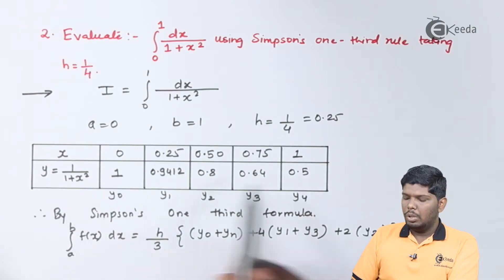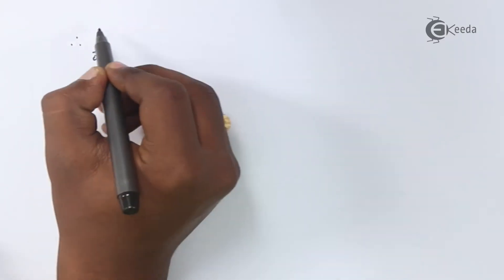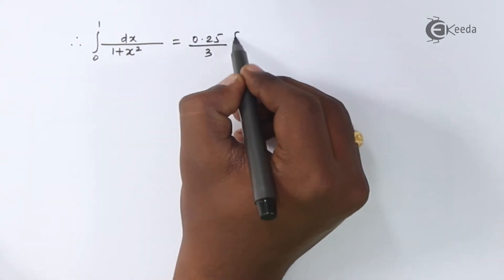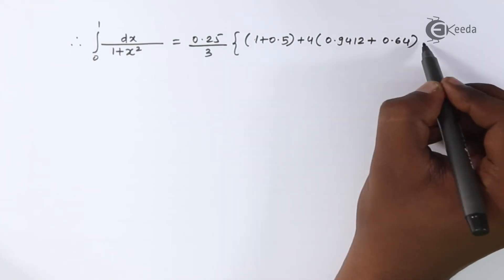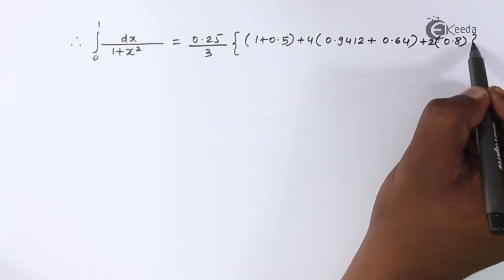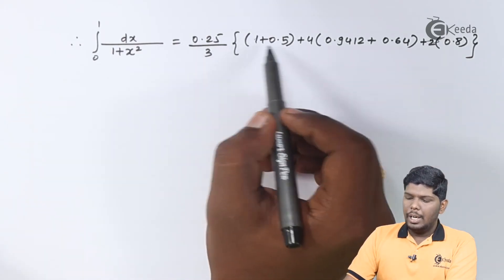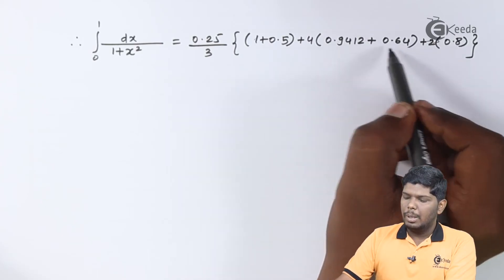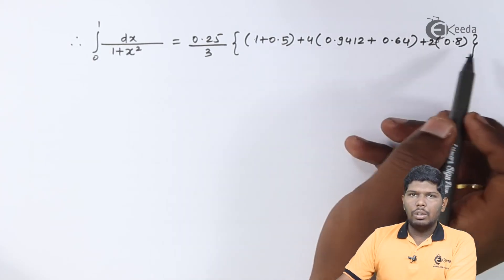Now let us substitute the values. Therefore after substituting the values we have 0.25 divided by 3 into 1 plus 0.5 plus 4 into 0.9412 plus 0.64 plus 2 into 0.8. Now let us solve these three brackets.